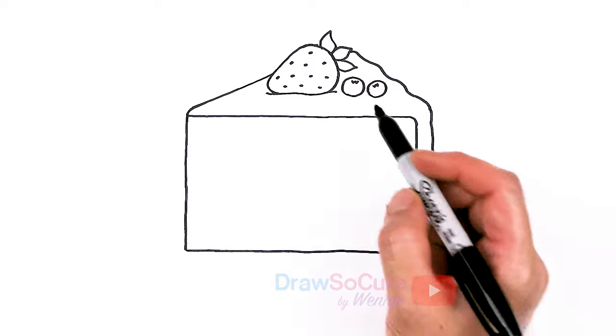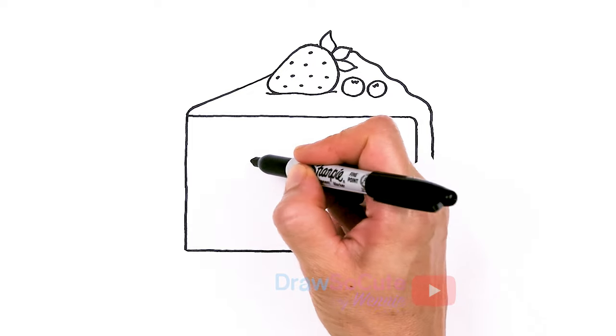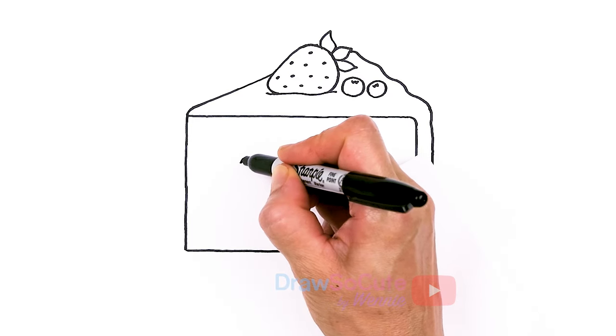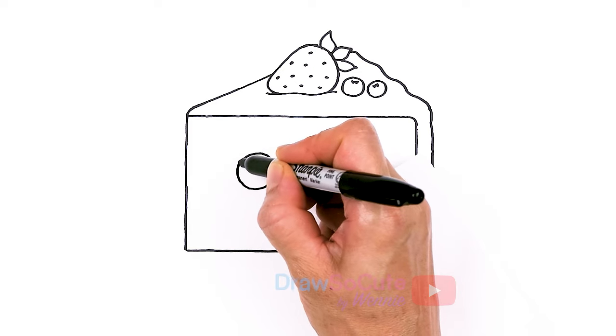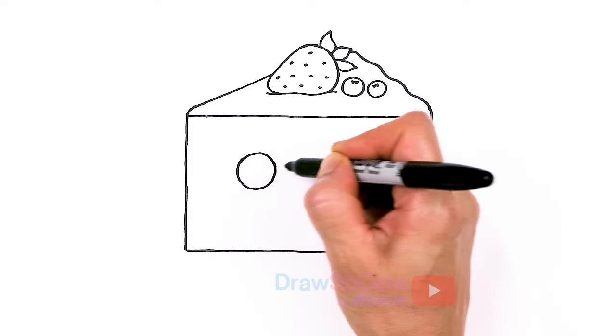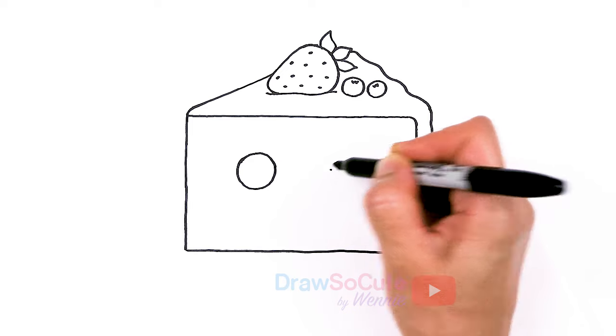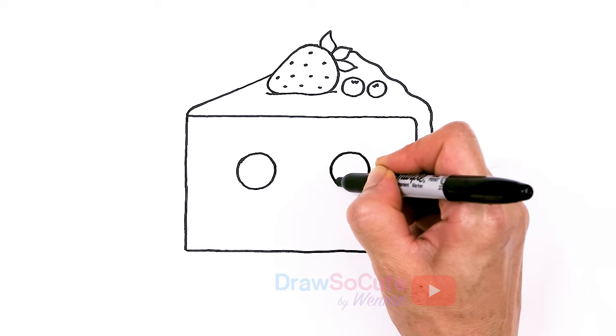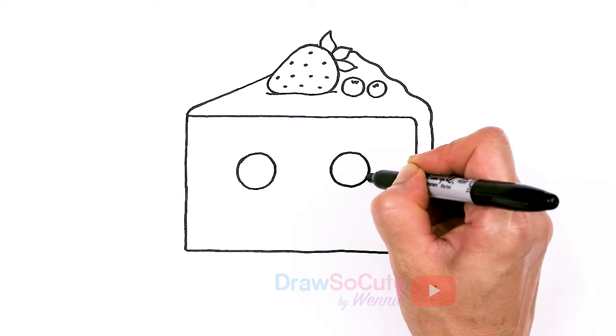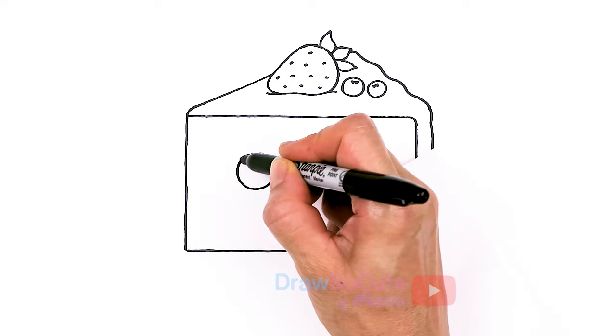So then now that we have that, let's bring it to life and make it a Draw So Cute slice of cake, right? So if you want to do that, just come about right here. And we're just going to draw a big circle for some Draw So Cute eyes. I'm going to come right across nice and wide, say about here. And draw another circle. Fill in both circles.